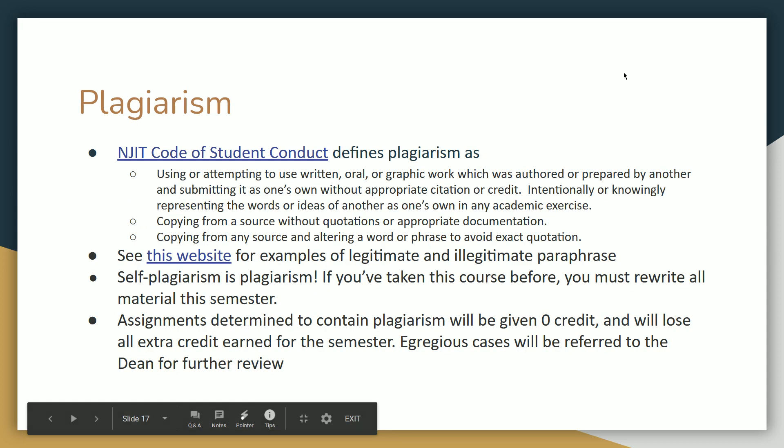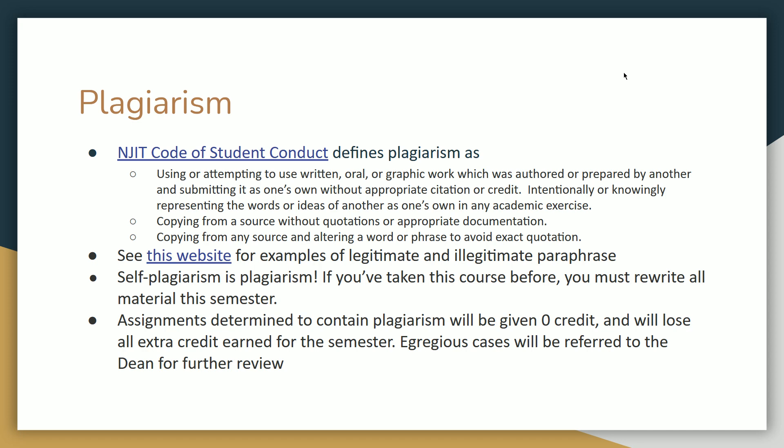Failure to do citations properly can result in plagiarism — not giving proper credit to your sources counts as plagiarism. Quoting or copying and pasting long sections from Wikipedia will count as plagiarism. It's always obvious when people copy directly from Wikipedia in a way that also copies all the hyperlinks within a paragraph.